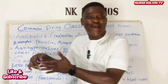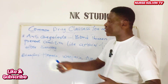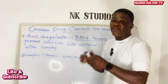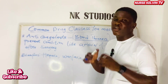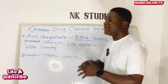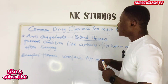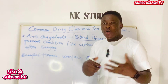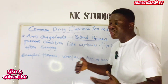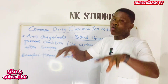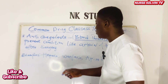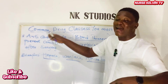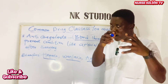The next class to talk about is the anti-coagulant class of drugs, also known as blood thinners. They prevent clotting of the blood. They are used in conditions like atrial fibrillation or after surgery. Examples of anti-coagulant medications include heparin, warfarin, and apixaban. All these are under the anti-coagulant class of drugs.